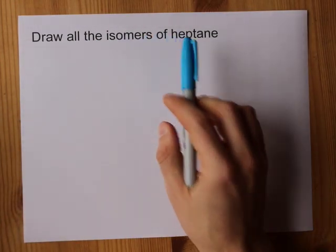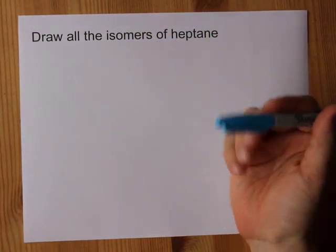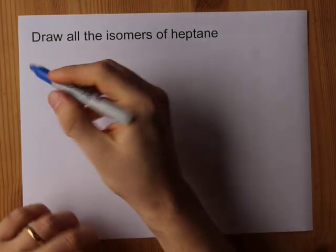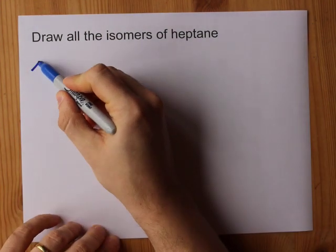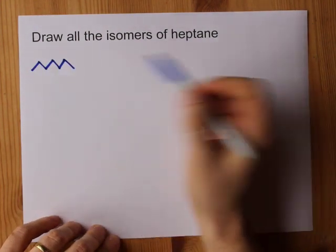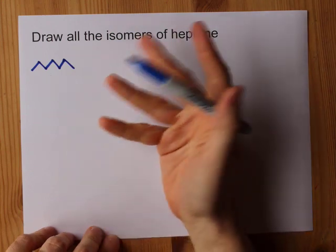Draw all of the isomers of heptane. Let's start with the seven-carbon chain that is heptane — that's seven in a row.